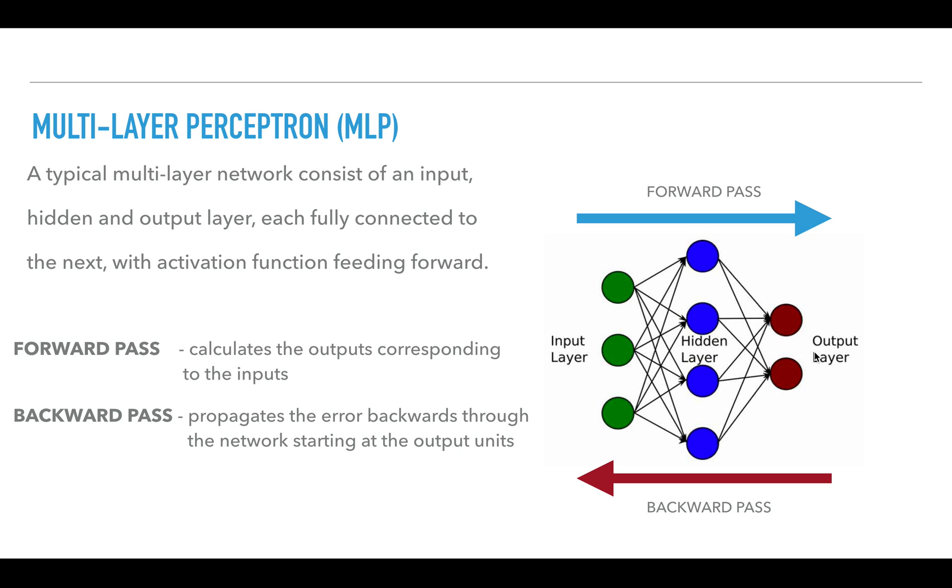From that output in the training phase, we have the actual and the predicted from which we can get the loss or the error at the output layer. That error is propagated back to each neuron by adjusting the weights so that we can reduce the loss as much as possible, and that happens in our backward pass. Backward pass propagates the error backwards through the network starting at the output units.